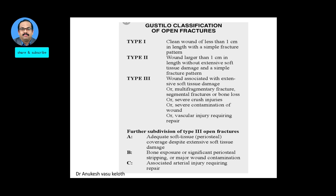Here I must mention the Gustillo-Anderson classification of open fractures. Open fractures can be Type 1, Type 2, and Type 3. Type 1 means the lacerated wound size is less than 1 centimeter, it is a clean wound with no contamination and minimal soft tissue injury.